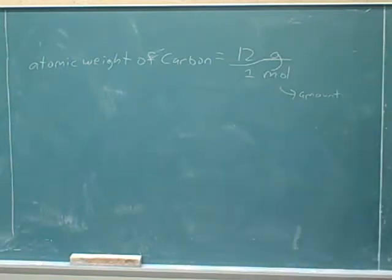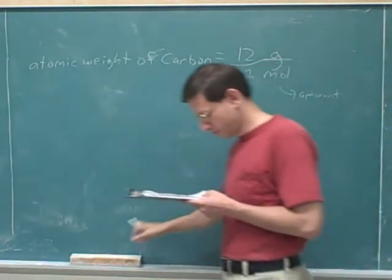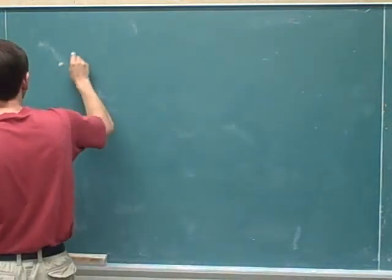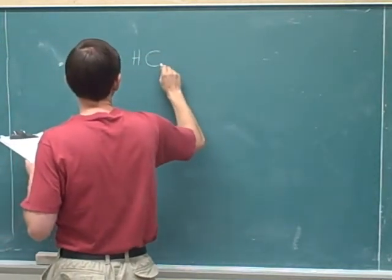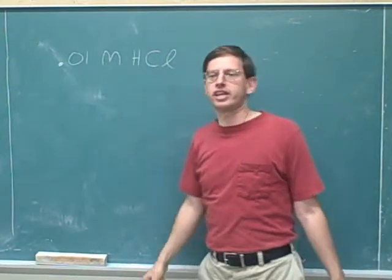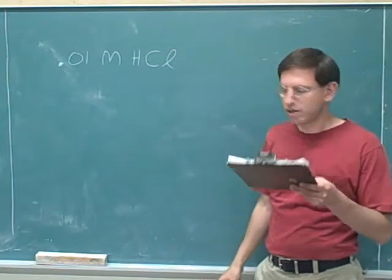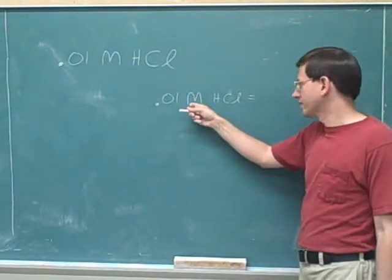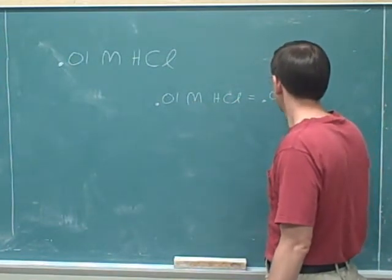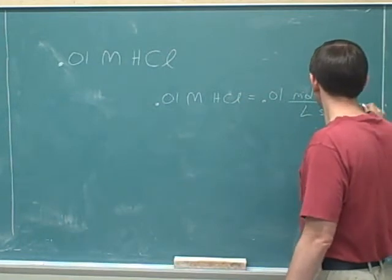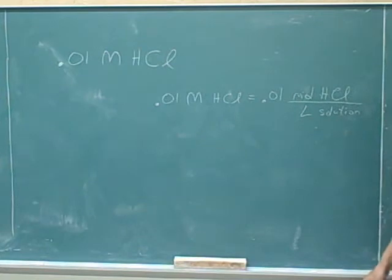Atomic weight is measured in a ratio unit. Let's talk about a concept from chemistry. Let's say that you have a solution that's 0.01 molar hydrochloric acid. What does that mean? Well, molarity is actually a ratio unit — molarity of hydrochloric acid really means moles of hydrochloric acid over liters of solution. Molarity actually means moles per liter of solution.